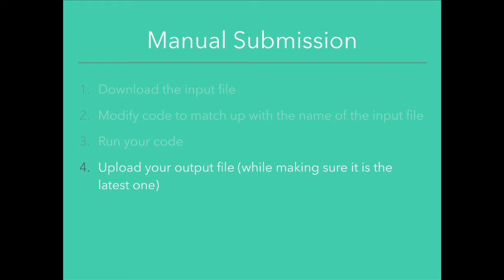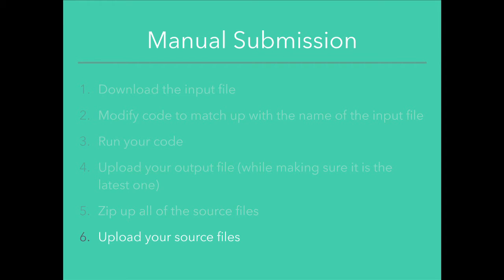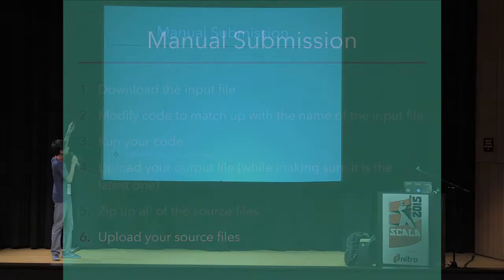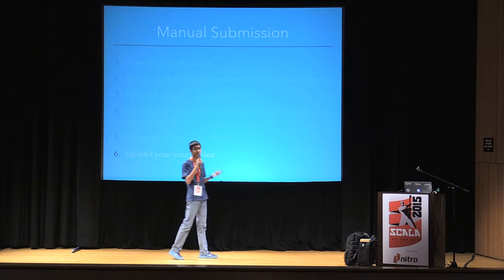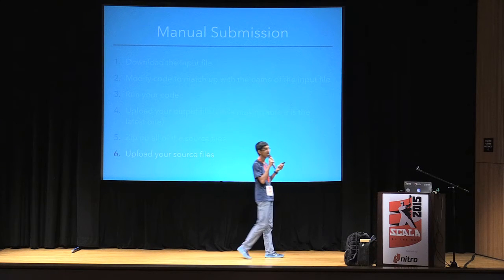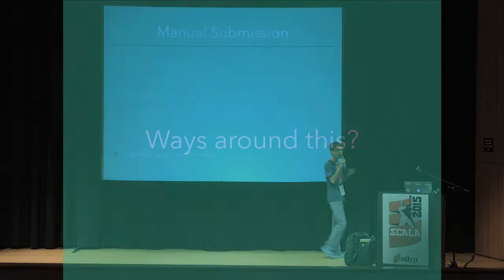Then you run your code with the input file name changed, upload your output file — and just like the input file, the output file might change too, so you have to upload the correct one. Once you've done that, you zip up all your source files and upload them. For every single submission you have to do in Google Code Jam, you go through this entire six-step process, which would get tedious — sometimes I'd screw up the zipping.